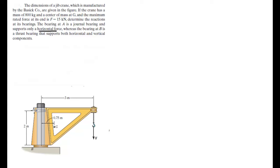Which means that it can only go horizontally, I'm going to assume it's going this way and B can have both a horizontal and vertical reaction so I'm going to assume it's going that way and I'm going to assume it's going that way.